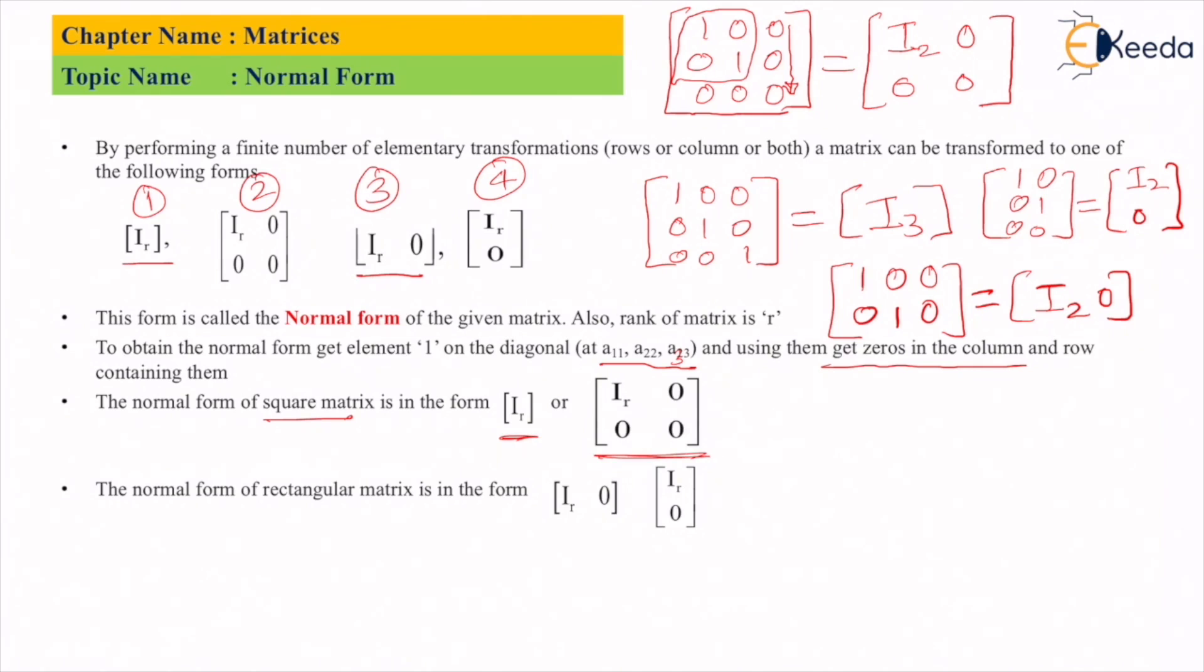Whenever the matrix is rectangular, you will get these two forms. To summarize, form number one and two you will get if the given matrix is a square matrix, and form number three and four you will get if the given matrix is a rectangular matrix.